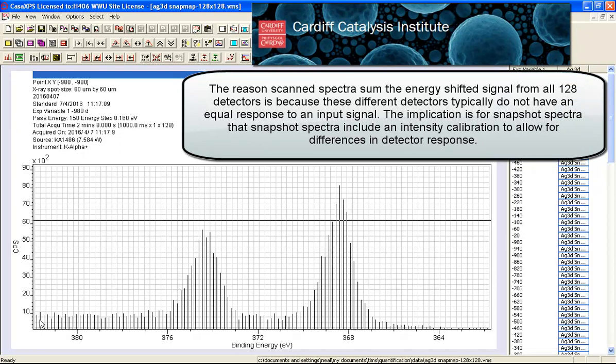The number of detectors that are spread across the dimension of the detector—in this case we have 128 detectors—so we have signal. Each one of these vertical lines represents signal that has been gathered from each of the individual 128 detectors that span this 20 eV energy interval.